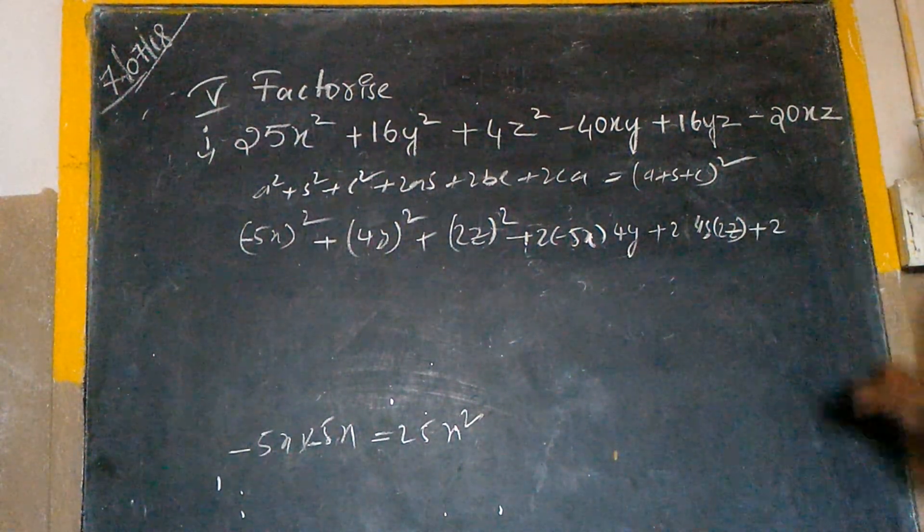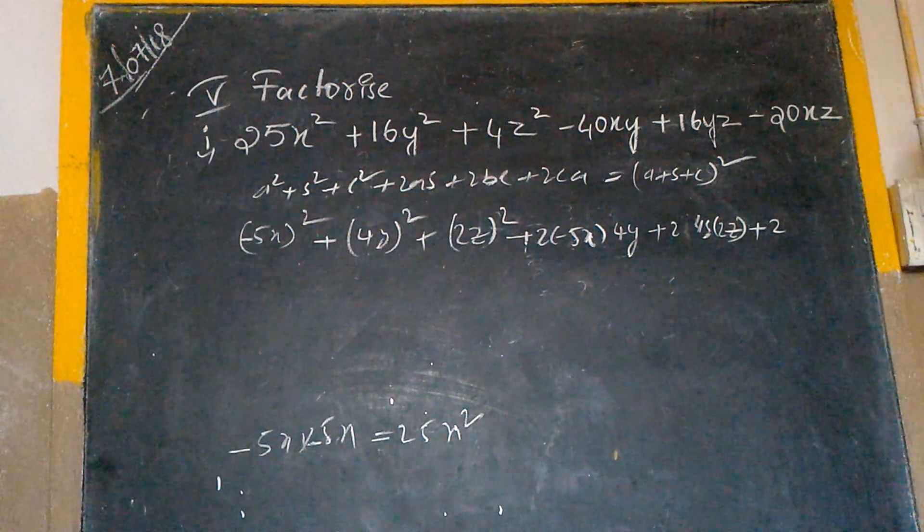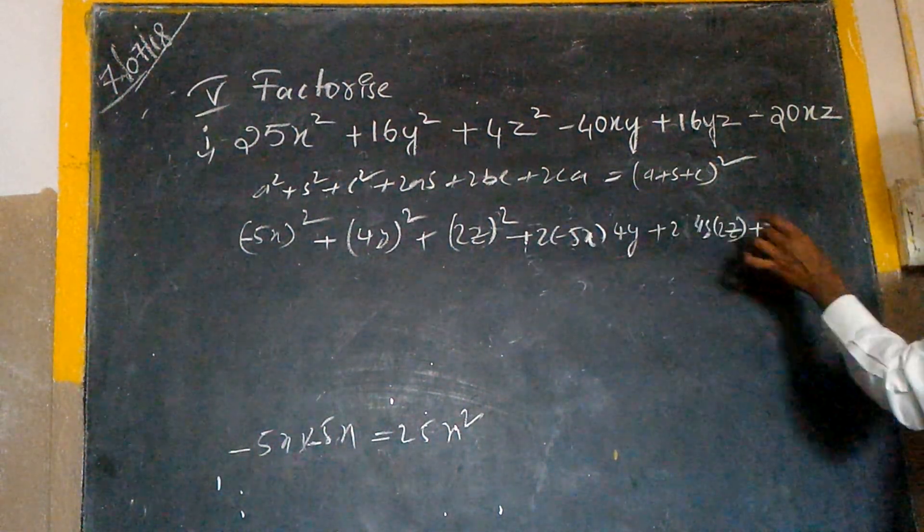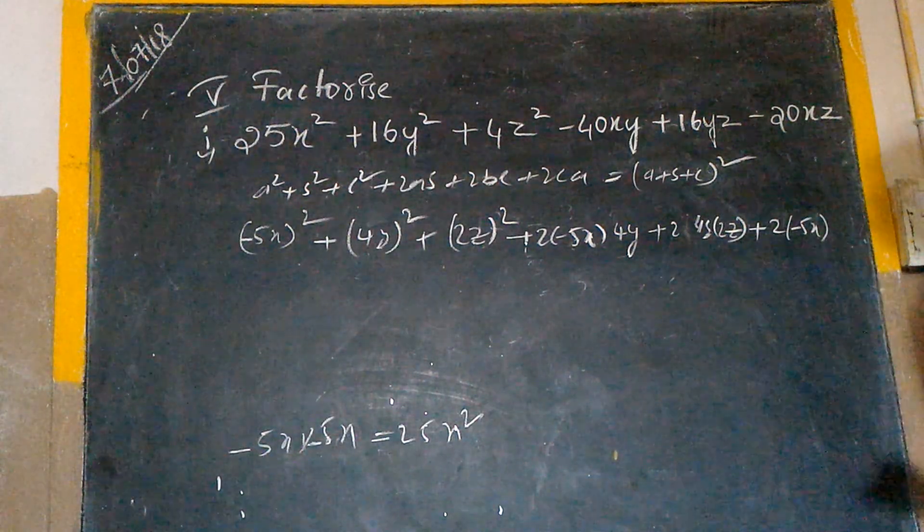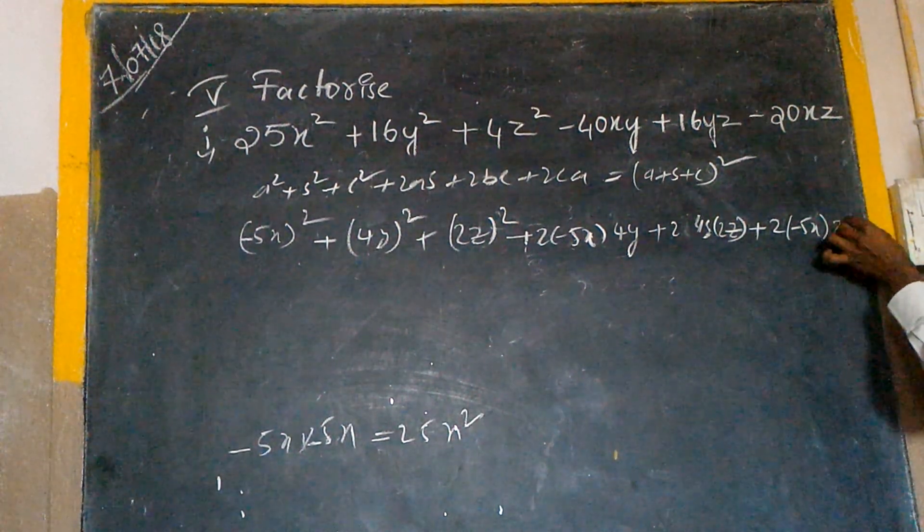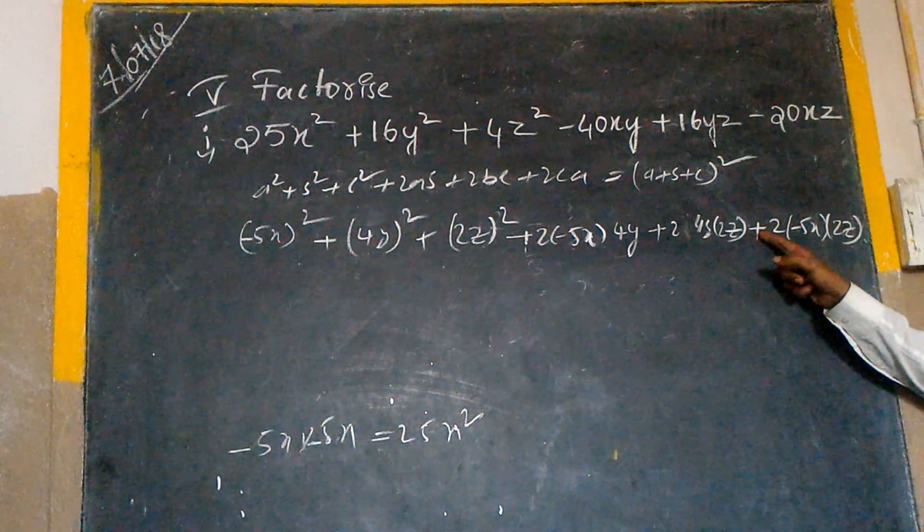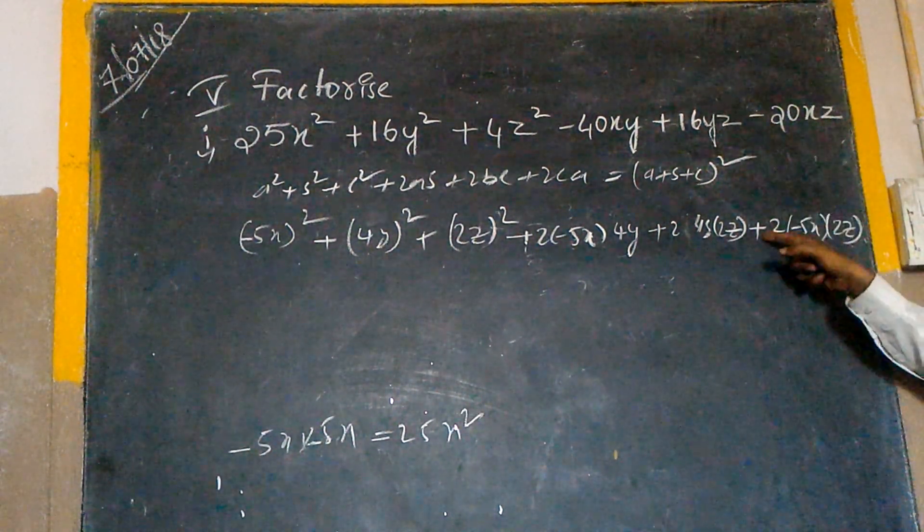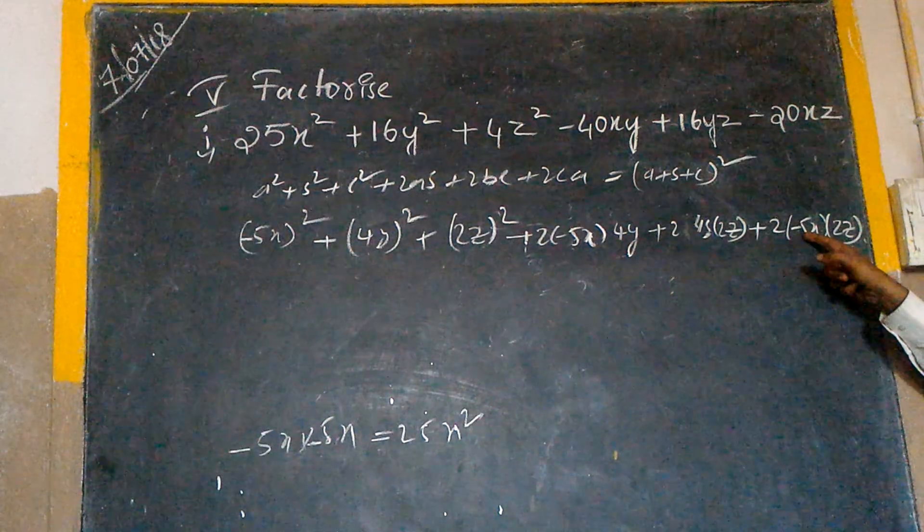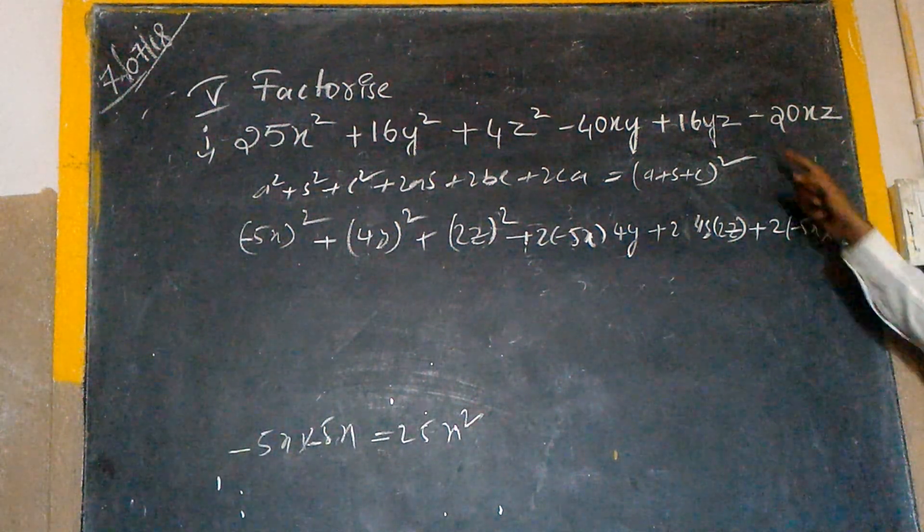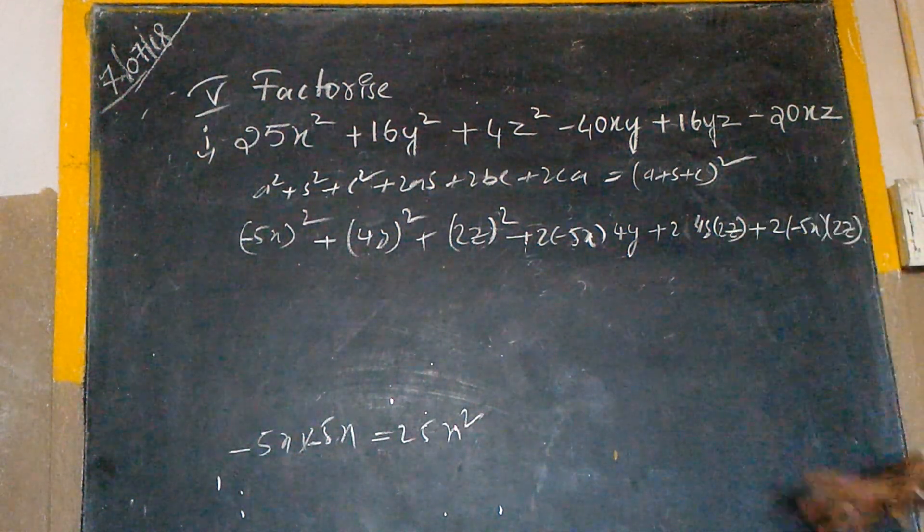Next 2ca. a is how much? Minus 5x. What is my c? 2z. Is it clear? Yes sir. Plus into minus is minus. 2 fives are 10, 10 twos are 20, x into z is xz.